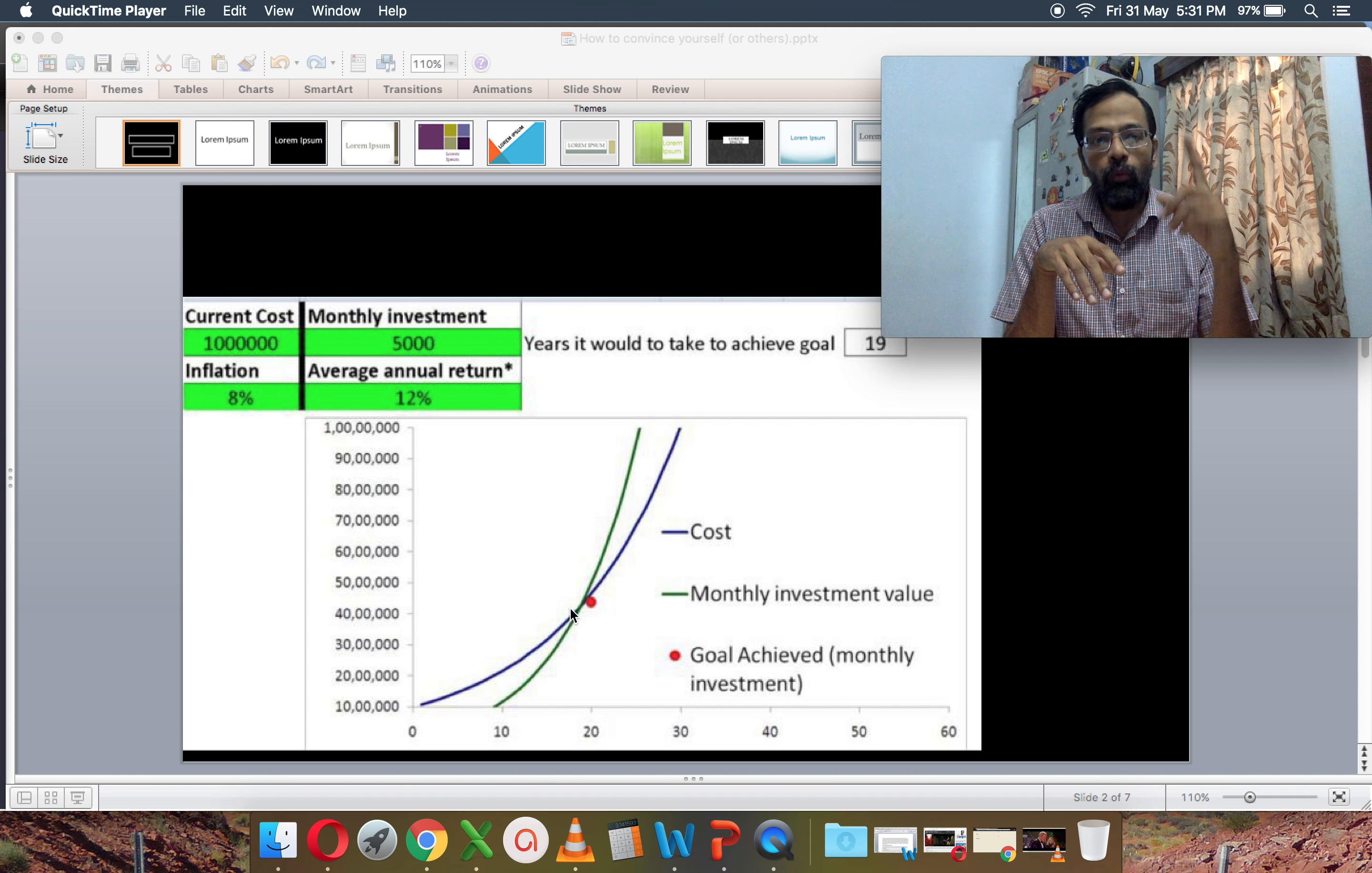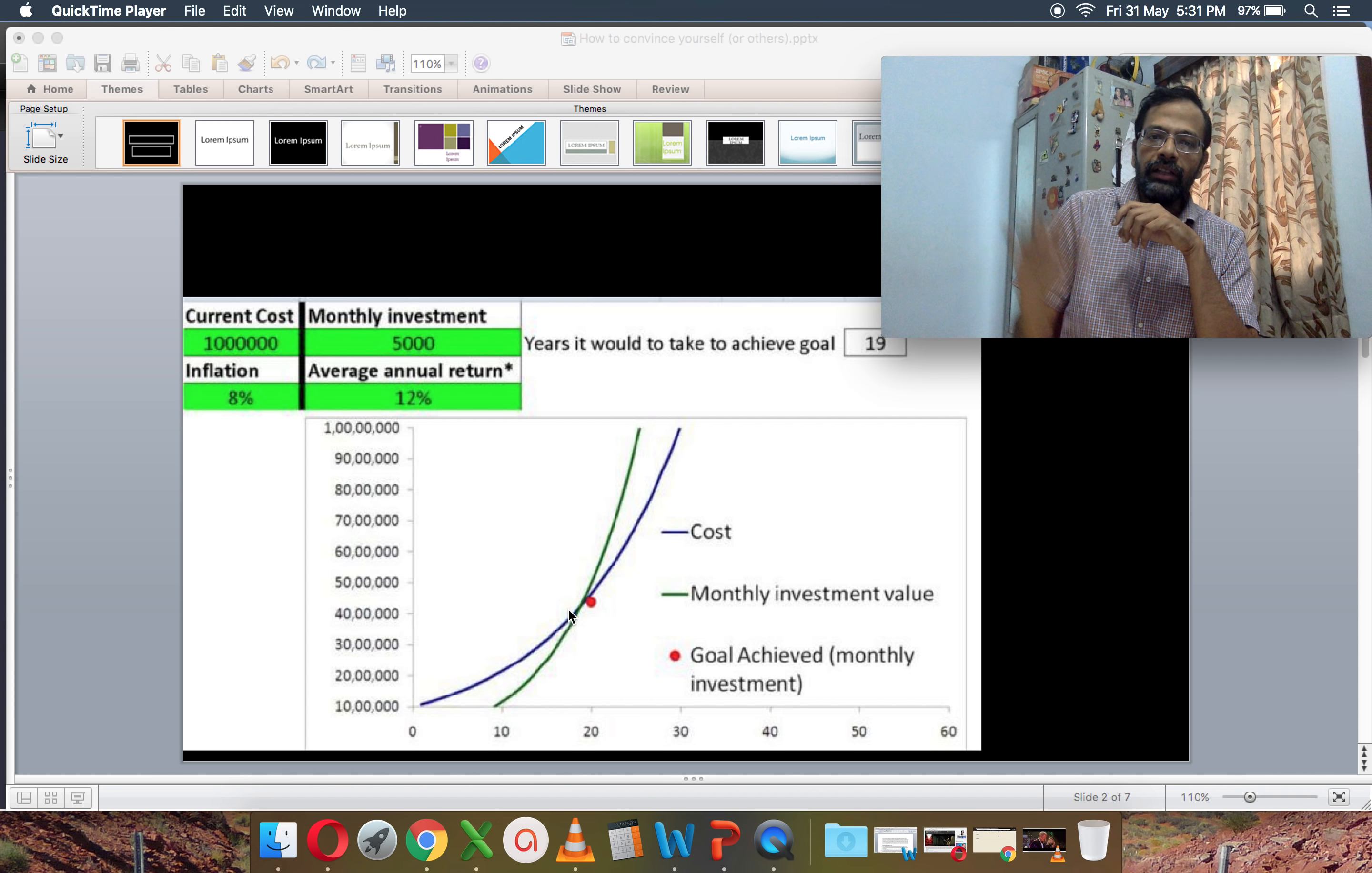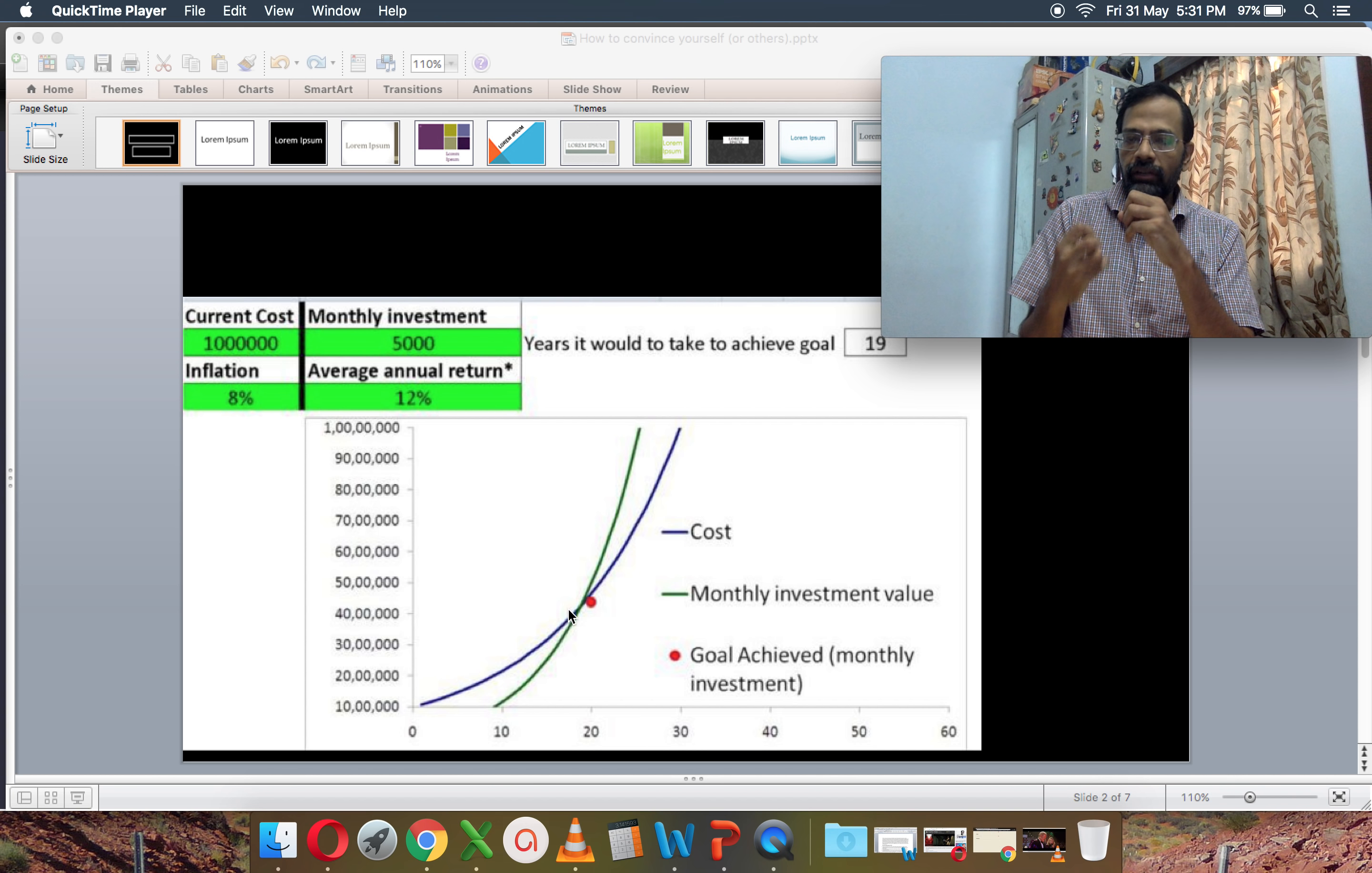So it will take 19 years for your goal to get achieved. Recognize there are three parameters here. Well, there are four inputs. One of them is the current cost, that is not in your control. You are not doing anything about it. The inflation of that commodity is also not in your control. There are two things that are in your control. The amount you can invest and the return that you get from your investment to some extent are in your control. We are going to see how these two, when we change these numbers, how they change the final output that is achieving the goal after 19 years. That's the final output.